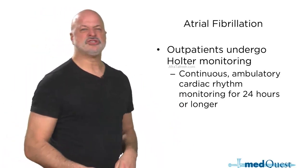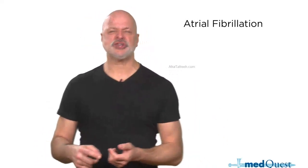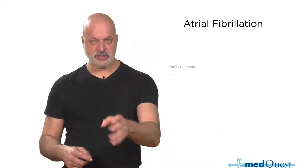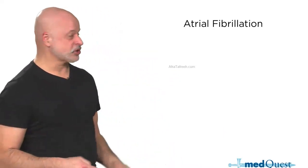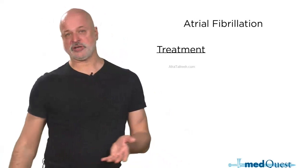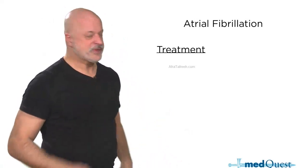What do you do if the Holter monitor shows ectopy that is not atrial fibrillation — in other words, atrial premature contractions or ventricular premature contractions? Nothing. You don't like atrial premature contractions or ventricular premature contractions, but you don't do anything about them.